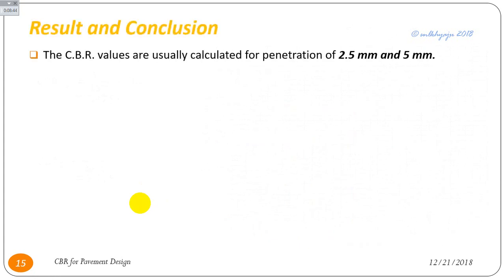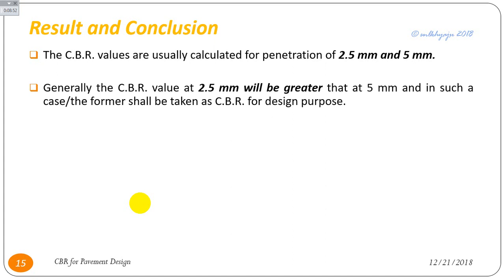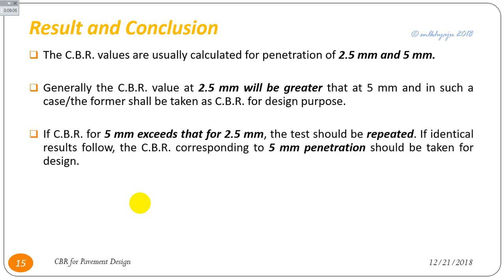Result and conclusion: CBR values are calculated for penetrations of 2.5 mm and 5 mm. Generally, the CBR value at 2.5 mm will be greater than at 5 mm, and in such a case the former value is taken for design purposes. If the CBR at 5 mm exceeds that at 2.5 mm, the test should be repeated. If identical results follow, the CBR corresponding to 5 mm penetration should be taken for design.